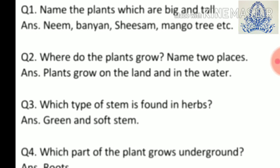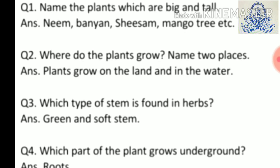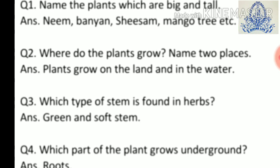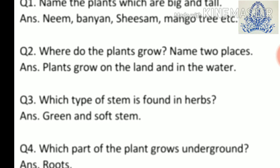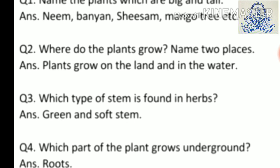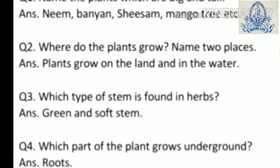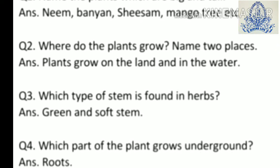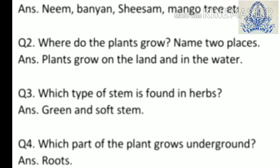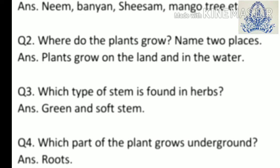Question three: which type of stem is found in herbs? Answer: green and soft stems. Question four: which part of the plant grows underground? Answer: roots.